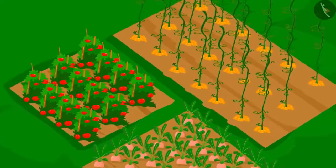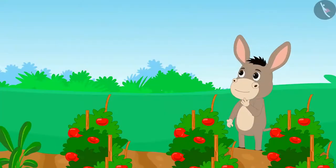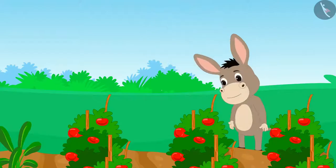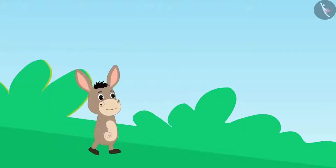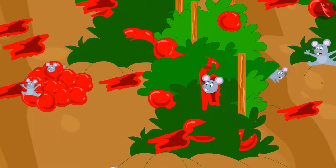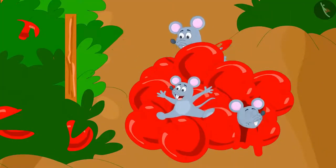Bhola's farm has had a very good crop this time. He thought he would come back the next day and harvest his crop. The next day, when Bhola reached his farm, he saw that mice had created havoc there. Those mice were eating Bhola's tomatoes with great interest.